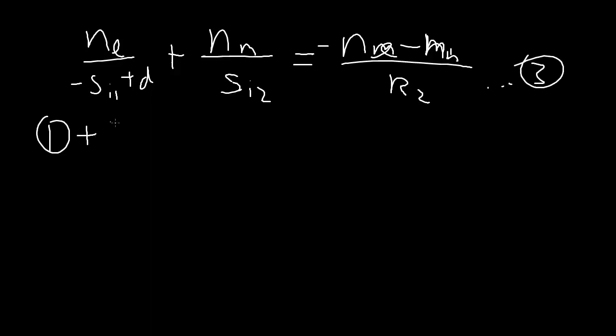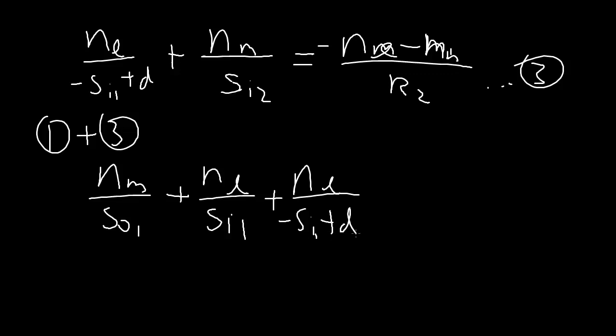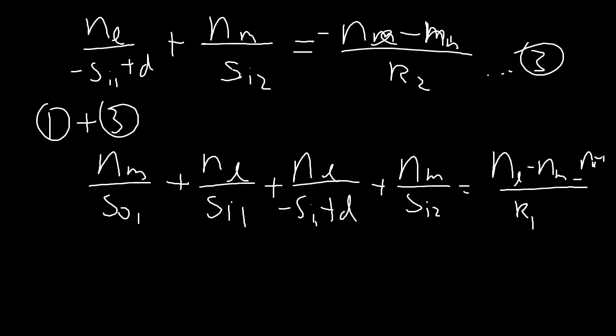If we take equation 1 plus equation 3, we end up with Nm over SO1 plus Nl over SI1, plus Nl over negative SI1 plus D plus Nm over SI2 equals Nl minus Nm over R1 minus Nl minus Nm over R2.